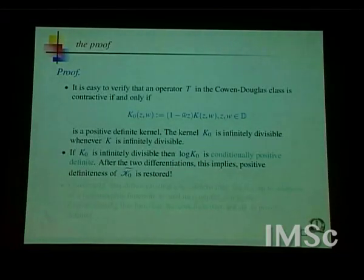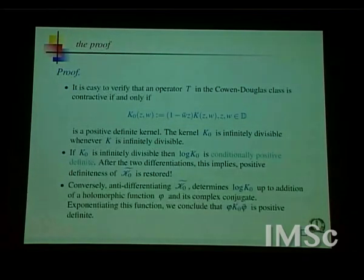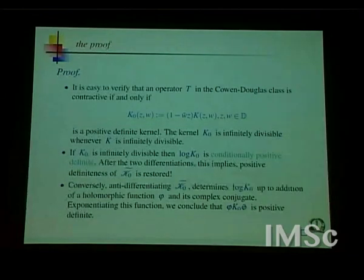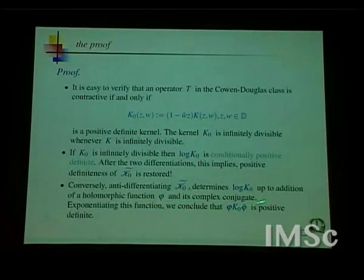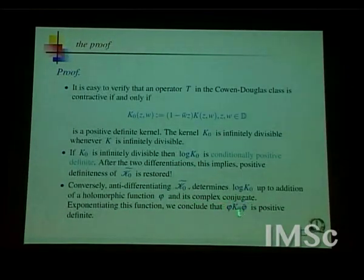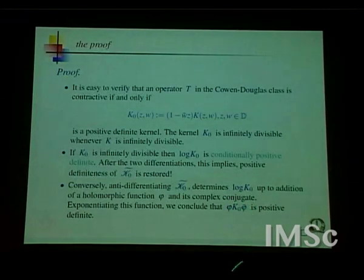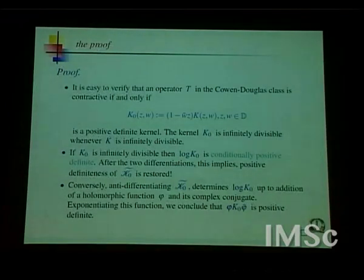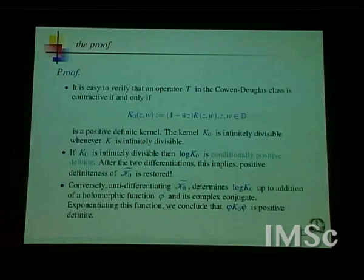The converse: you take K̃₀ given to be positive definite and anti-differentiate — integrate with respect to ∂/∂z and ∂/∂w̄ — to obtain log K₀ up to addition of a holomorphic function p and its complex conjugate. Exponentiating, you determine K₀ up to multiplication by a holomorphic function and its conjugate. From there it follows that K₀ must have been positive definite and infinitely divisible to begin with. That completes the proof. And I am done — thank you very much.